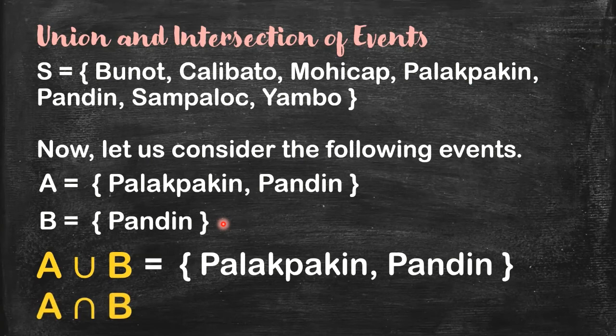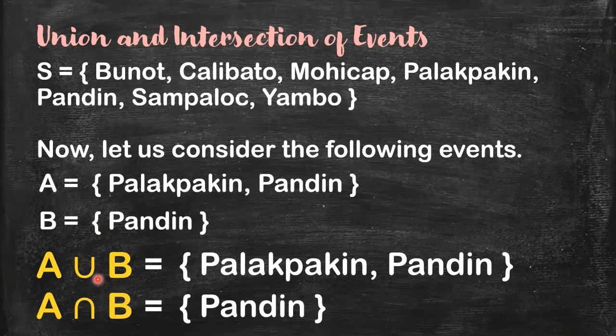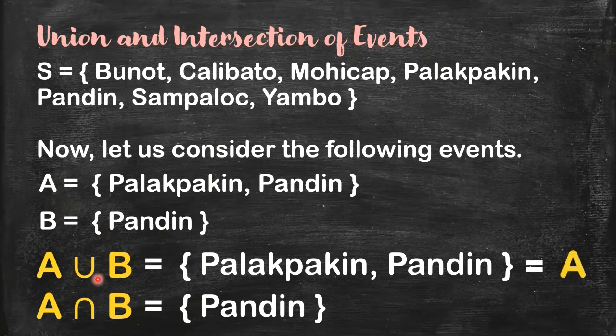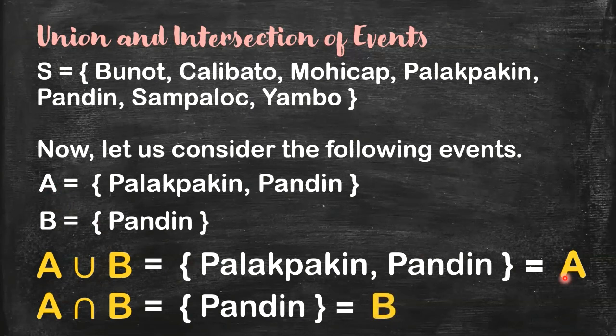Now we get the union and intersection of these two events. So let's have A union B. All you have to do is combine all the elements. The union contains these two lakes: Palakpakin and Pandin. Now we take the intersection. Is there a common element? Do they share an element? Yes, Pandin. So this set contains Pandin. Now, if you look closely, A union B is exactly A, and A intersection B is exactly B. This happens when you have two sets where the smaller set is properly contained in the bigger set, meaning all elements of the smaller set are in the bigger set. If you have that situation, their union equals the bigger set, and their intersection equals the smaller set.